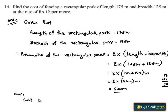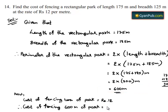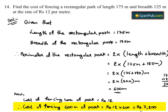Now, cost of fencing 1 meter of park is equal to Rs 12. Therefore, cost of fencing 600 meters of park is equal to Rs 12 multiplied by 600. This equals Rs 7200. Therefore, the cost of fencing the rectangular park is Rs 7200.